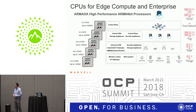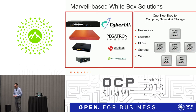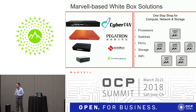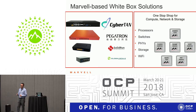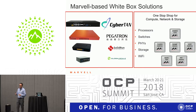Marvell has a broad portfolio. We have a CPU — A53 and A72 — from 1 GHz to 2.5 GHz, 2-core to 8-core. We have the Prestera switching from 50 gigabit bandwidth up to 1.8T. We also have a wide range of switch products and a SoHo switch going from 4-port to 11-port Gigabit Ethernet with 10G, plus our Alaska PHY portfolio.